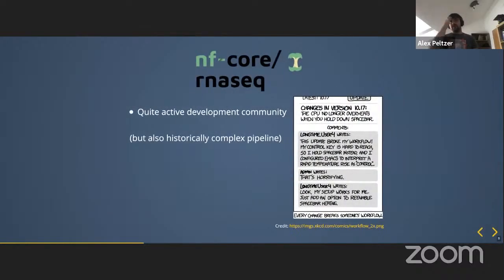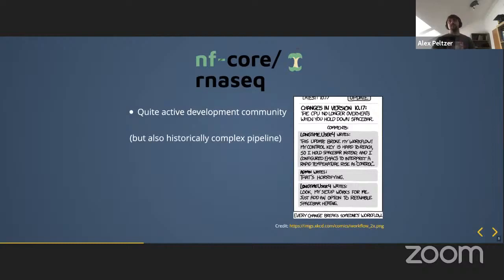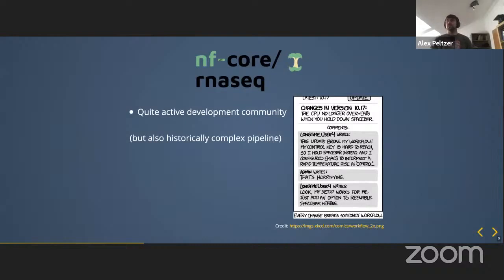The pipeline also involves a quite active development community. It's historically a complex pipeline with lots of additions recently — some new aligners, new special features. Adding new features to an existing pipeline can break behavior that others relied on, and unfortunately there have been a couple of cases of this. The hope is that things will improve once we move to DSL version 2 and make the pipeline more modularizable.